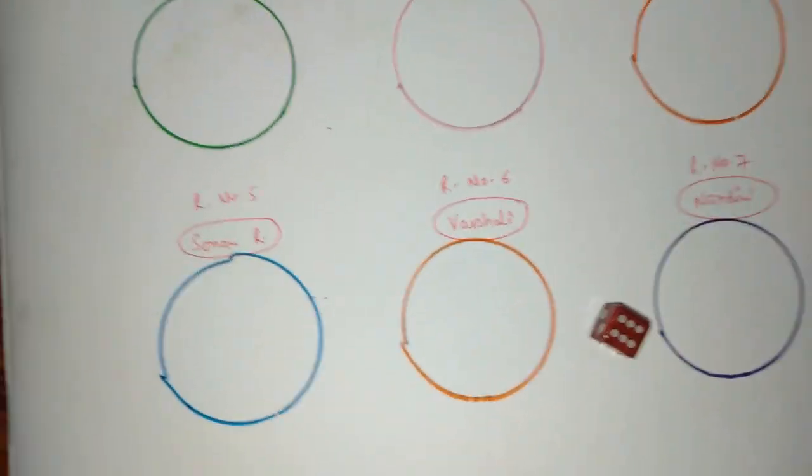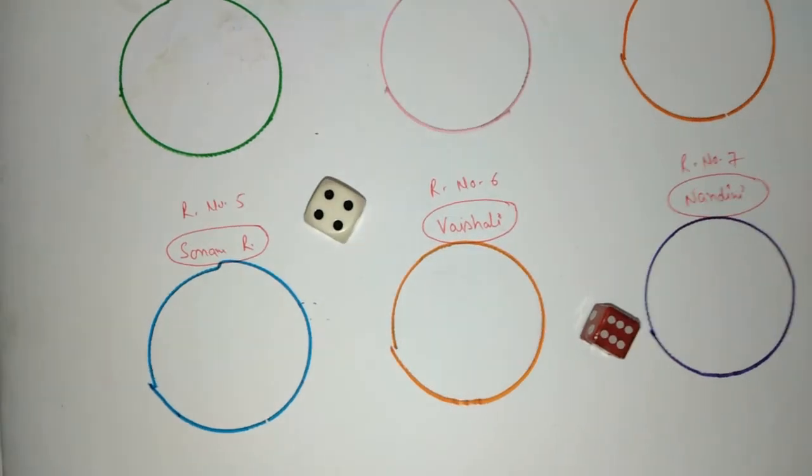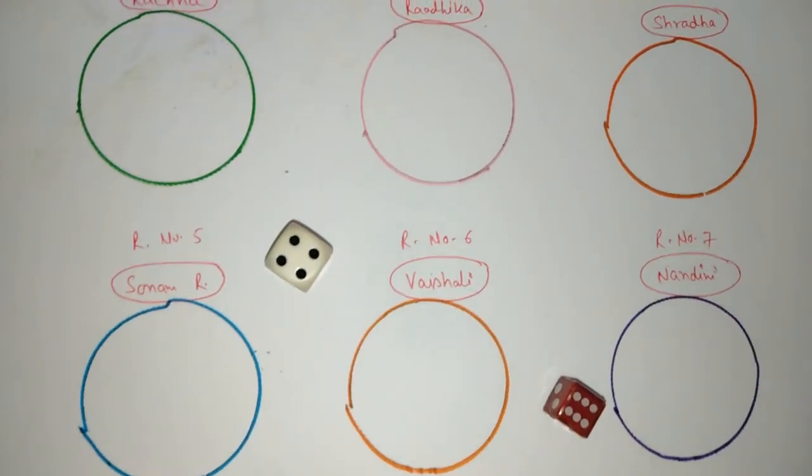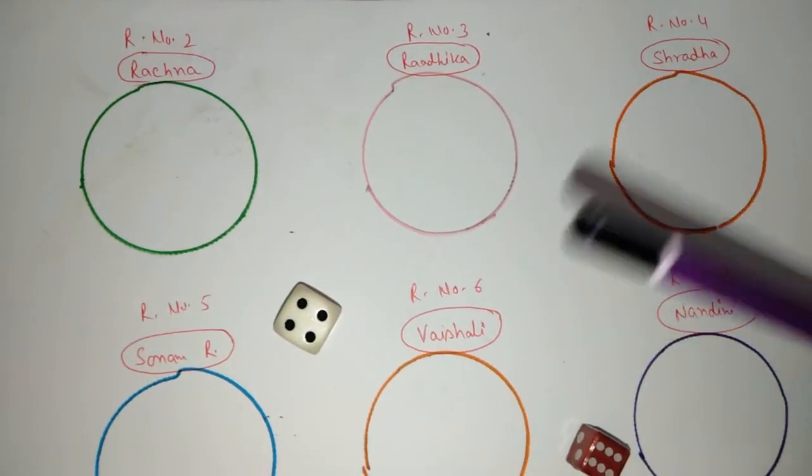Let's see, we are going to play one dice game. We will need two dice. Where are the numbers from? One to six. So we are going to play six kids.